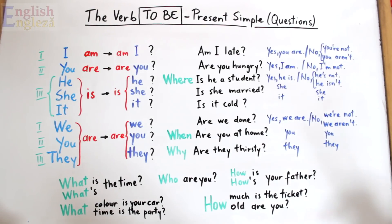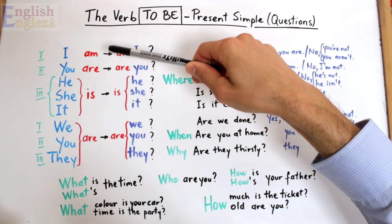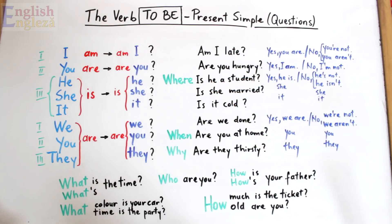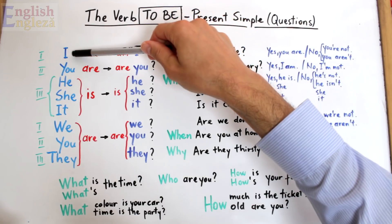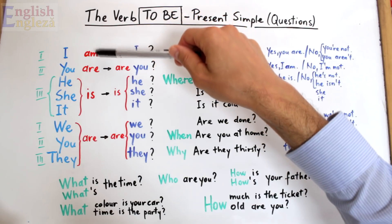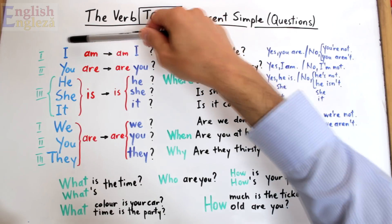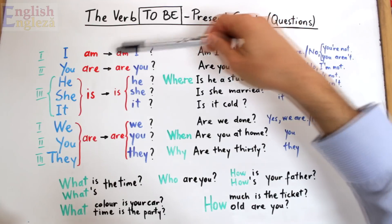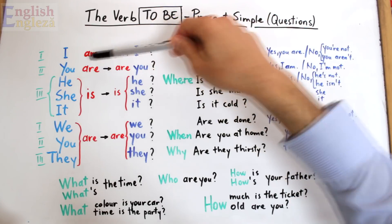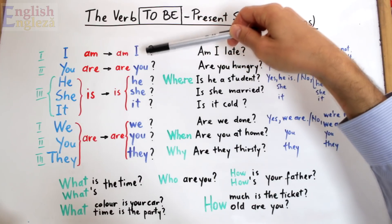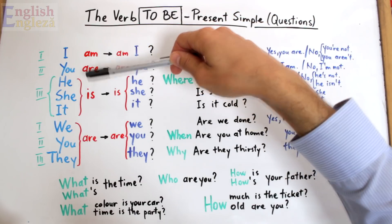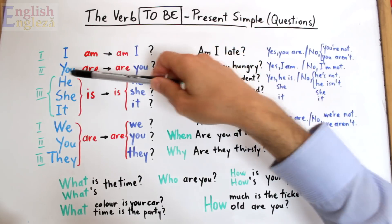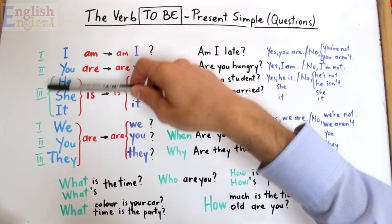Dacă am reținut formele verbului to be însoțite de pronumele personale corespunzătoare din lecția video 1, formularea întrebărilor este foarte simplă, deoarece trebuie doar să inversăm locul subiectului cu cel al verbului to be. Astfel, I am, eu sunt, devine Am I, sunt eu. You are, tu ești, devine Are you, ești tu. Apoi, de exemplu, He is, el este, devine Is he, este el.